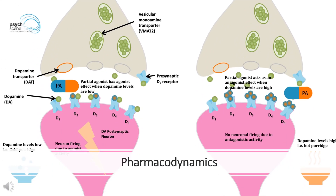Pharmacodynamics: Ziprasidone is classified as a second-generation or atypical antipsychotic and is a dopamine and 5-HT2A receptor antagonist with a unique receptor binding profile. Ziprasidone has a very high 5-HT2A-to-D2 affinity ratio, binds to multiple serotonin receptors in addition to 5-HT2A, and blocks monoamine transporters which prevents 5-HT and norepinephrine reuptake. On the other hand, Ziprasidone has a low affinity for muscarinic cholinergic M1, histamine H1, and alpha-1 adrenergic receptors.